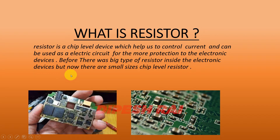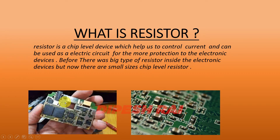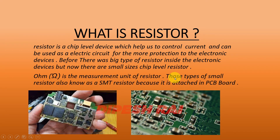Before, there was a big size type of resistor in electronic devices — for example, in radios there was a big size resistor. But right now there are small size chip level resistors. The resistor is one of the important parts available inside the mobile phone PCB board. You can see here there is an example of a PCB board with different kinds of ICs, small components, and different kinds of resistors.